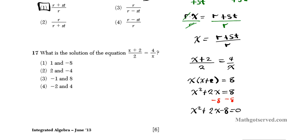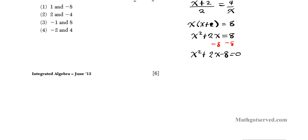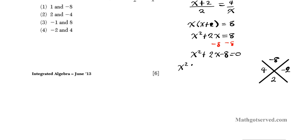So I'm going to factor this using the X-game method. I'll make a little x where AC goes on the top and B goes on the bottom. Here A is 1, B is 2, C is negative 8. So AC is negative 8 and B is 2. What two numbers multiply to give you negative 8 and add to give you 2? Since the product is negative and the sum is positive, the small number has to be negative. So we have x squared plus 4x minus 2x minus 8 equals 0.